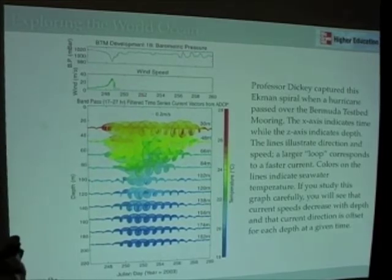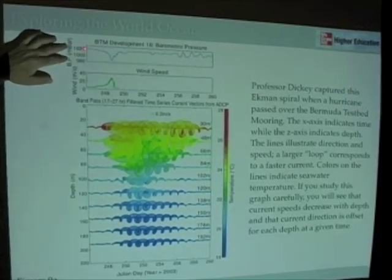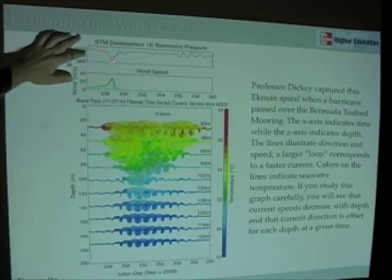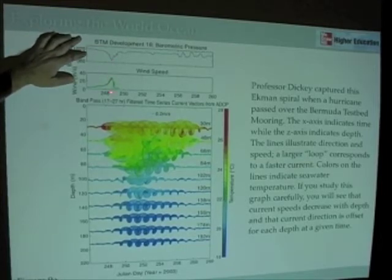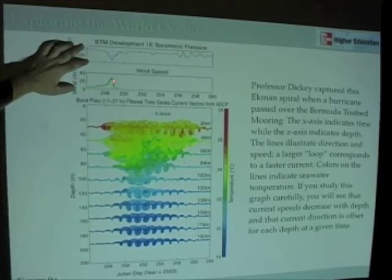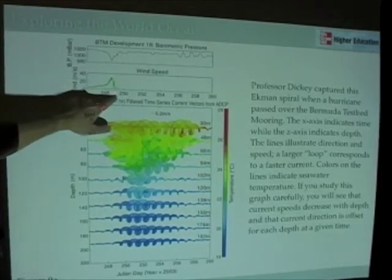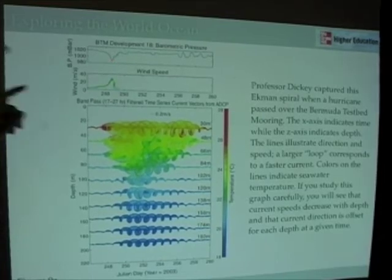Up top here we have some measure of barometric pressure. You can see it dropped precipitously on this day right here, which I believe is Julian Day 249. Pressure dropped precipitously.